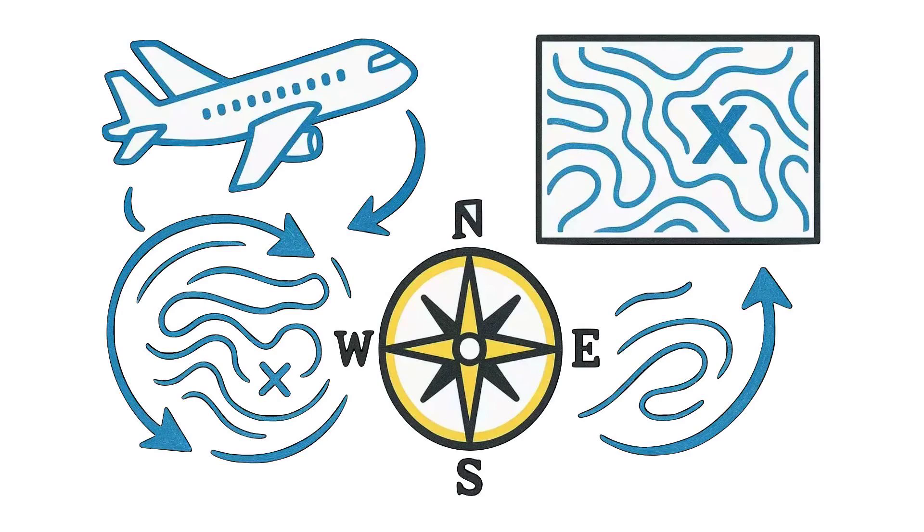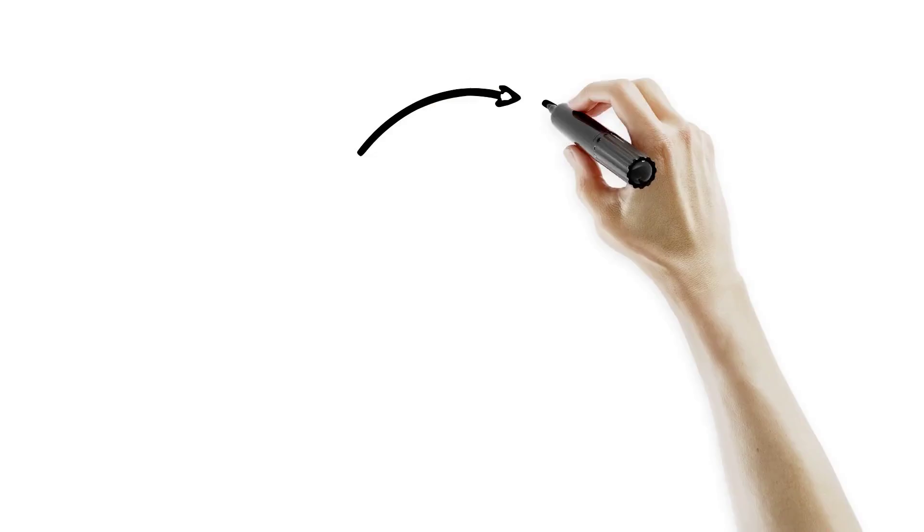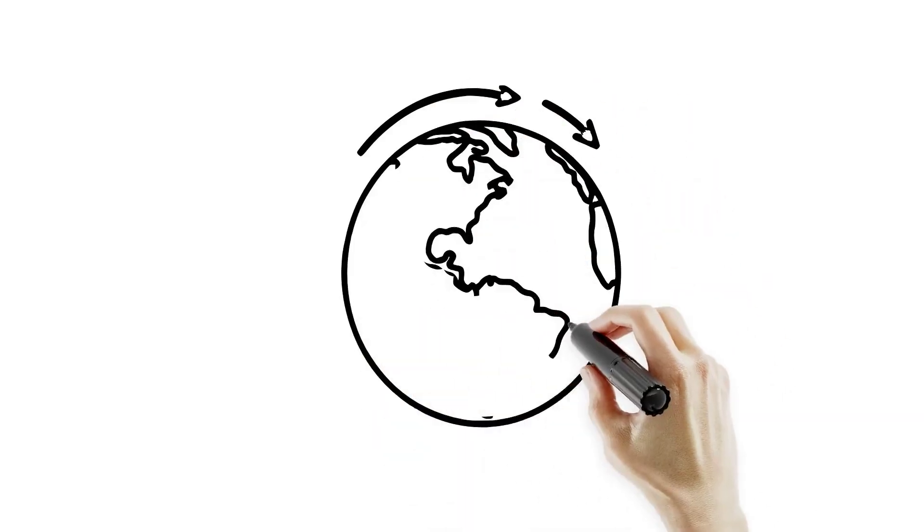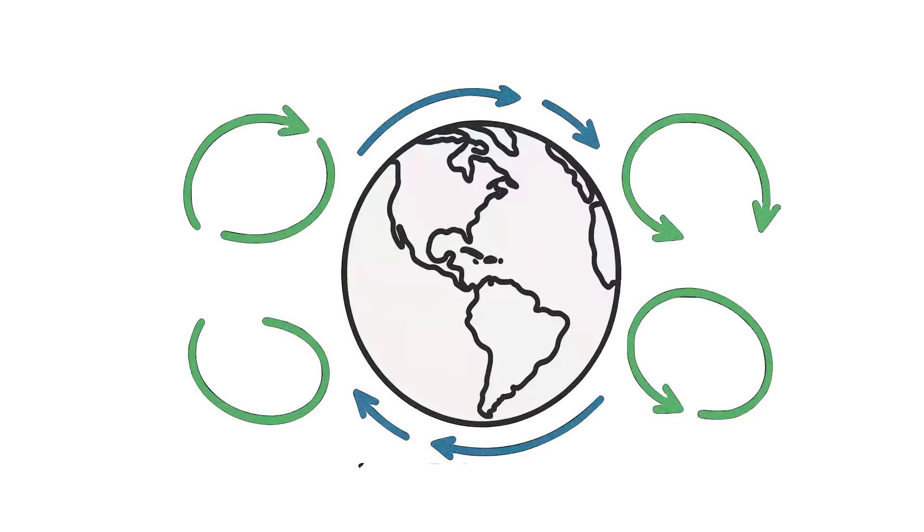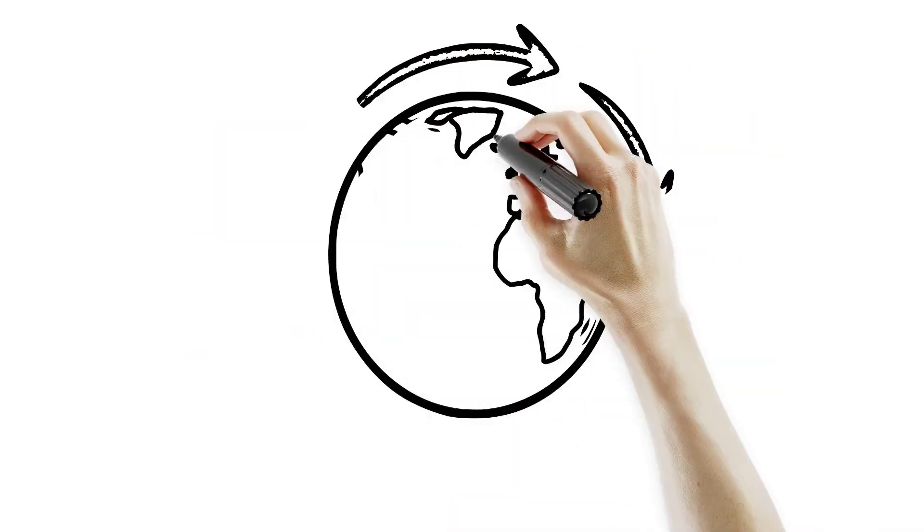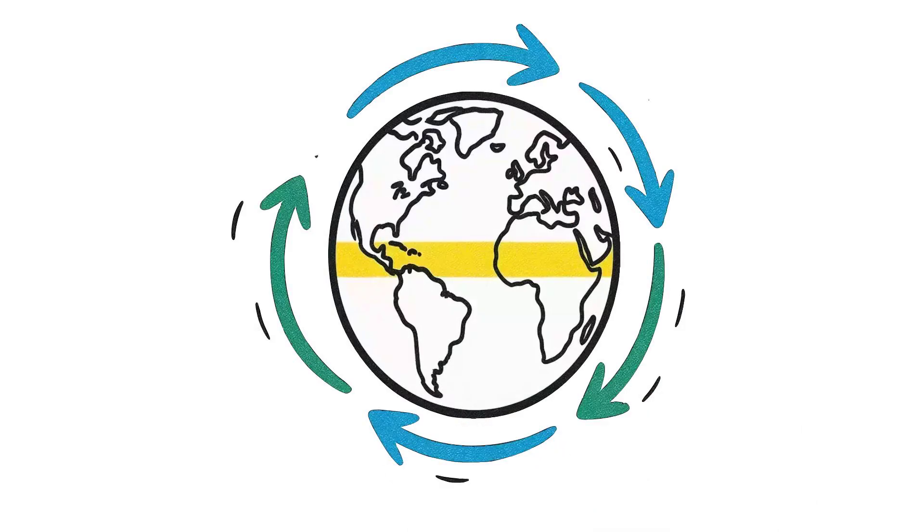The Coriolis effect connects atmosphere and ocean. It creates global windbelts, ocean gyres, and jet streams, the dynamic highways of Earth's climate system. It's why the Pacific's currents form vast clockwise loops, and why air rising near the equator flows poleward.